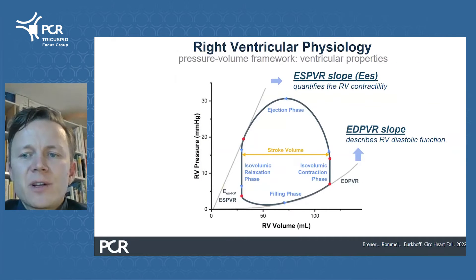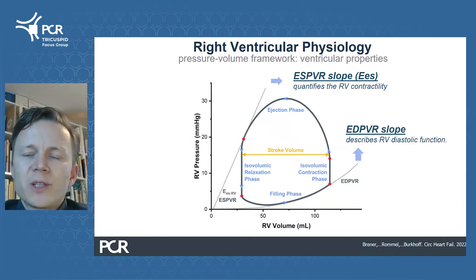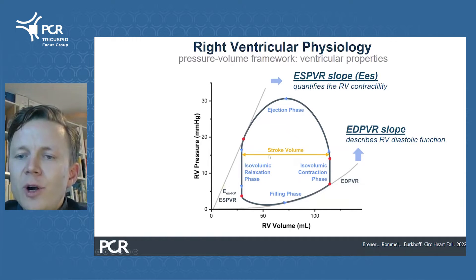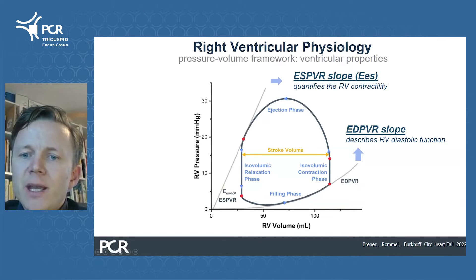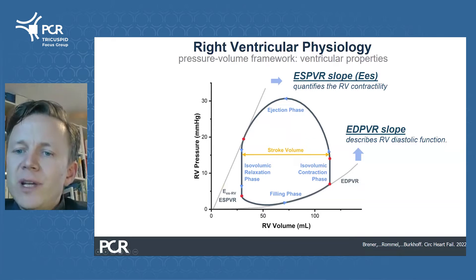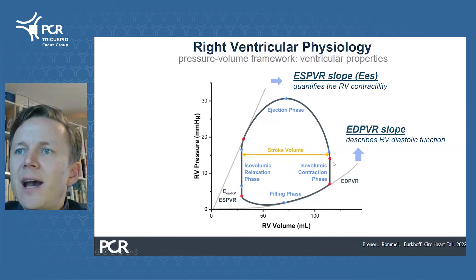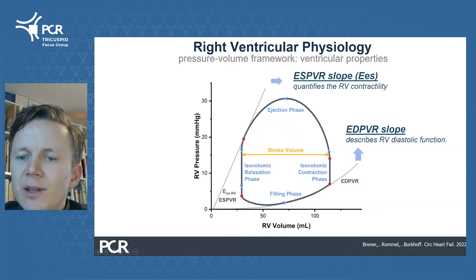Considering the right ventricle as a functional unit, you can also apply the pressure-volume loop framework, which describes the instantaneous changes in pressures and volumes during the cardiac cycle. The width of the loop corresponds to the stroke volume, the height of the loop represents the peak systolic pressure, and it shows four discrete phases: the filling phase at the bottom, the injection phase at the top, and the isovolumic contraction and isovolumic relaxation phases to the sides.